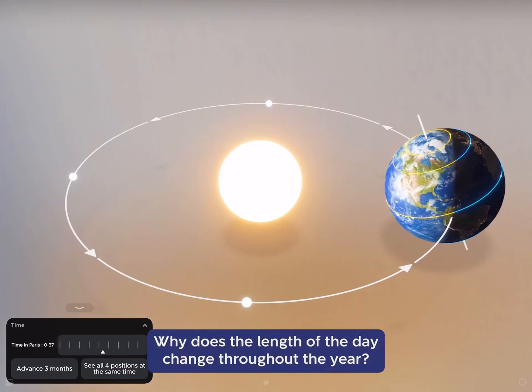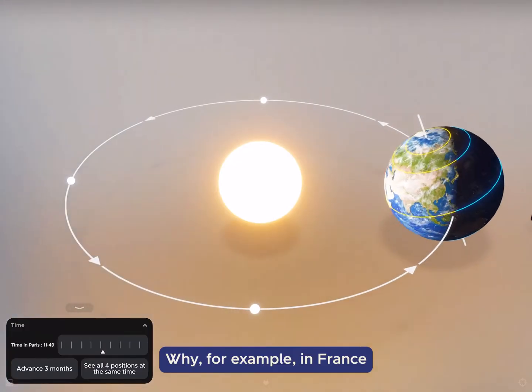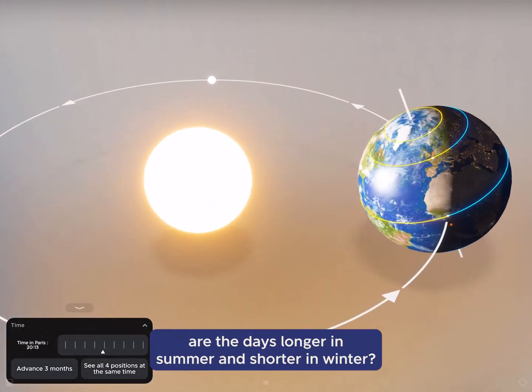Why does the length of the day change throughout the year? Why, for example, in France, are the days longer in summer and shorter in winter?